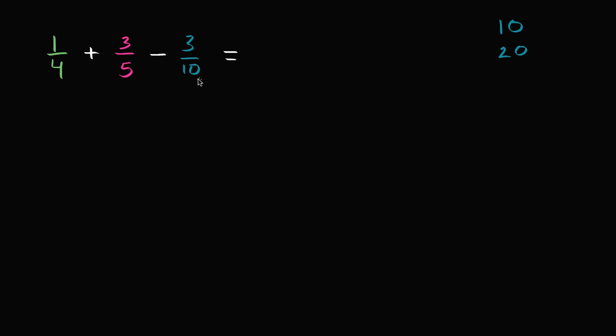So let's rewrite all of these fractions as something over 20. So let's start with 1/4. 1/4 is what over 20? Well, to go from 4 to 20, you have to multiply by 5. So you have to do the same thing to the numerator. You have to multiply it by 5. 1 times 5 is 5. 1 over 4 is the same thing as 5 over 20. 4 is 4 times 1. 20 is 4 times 5.